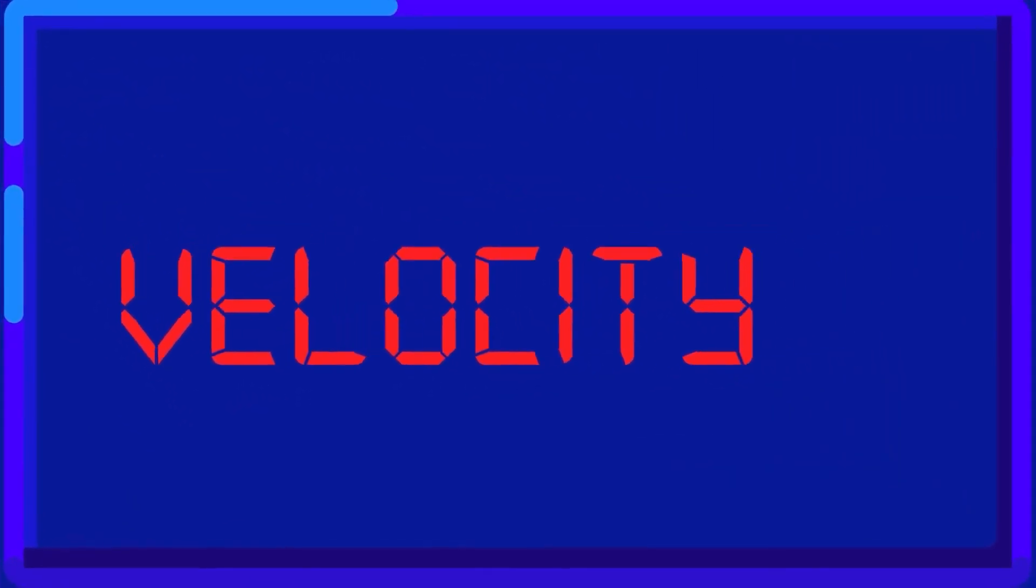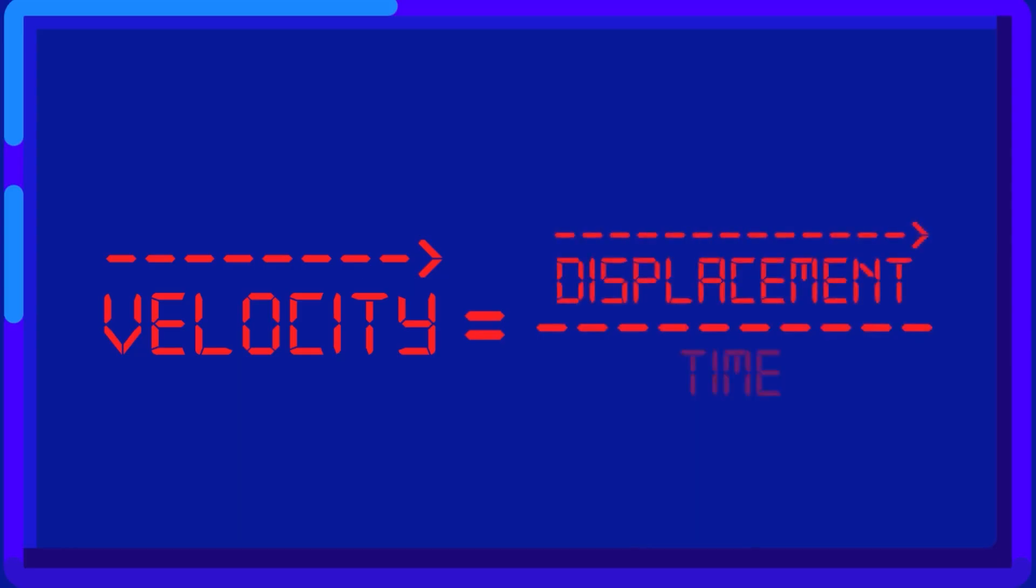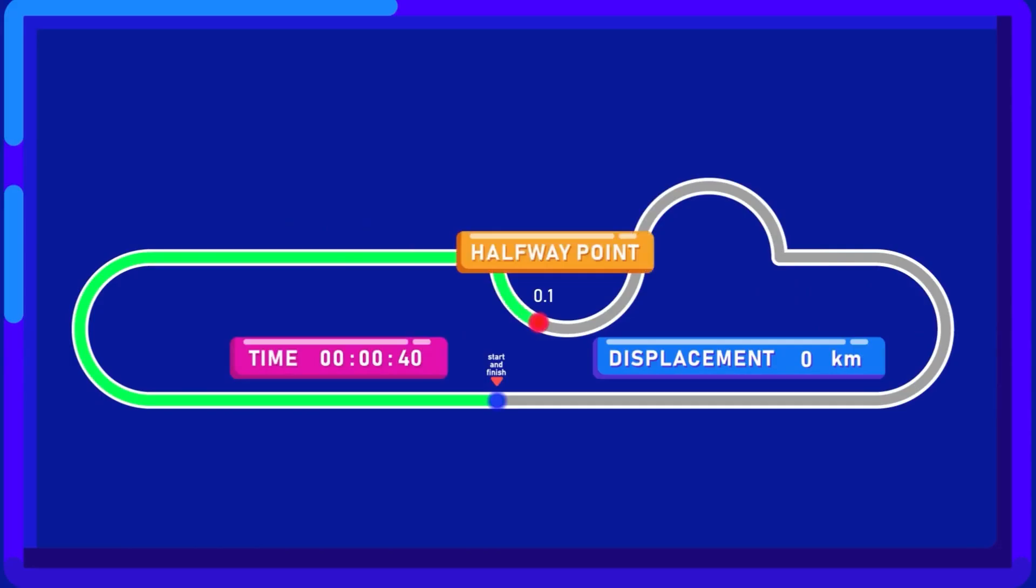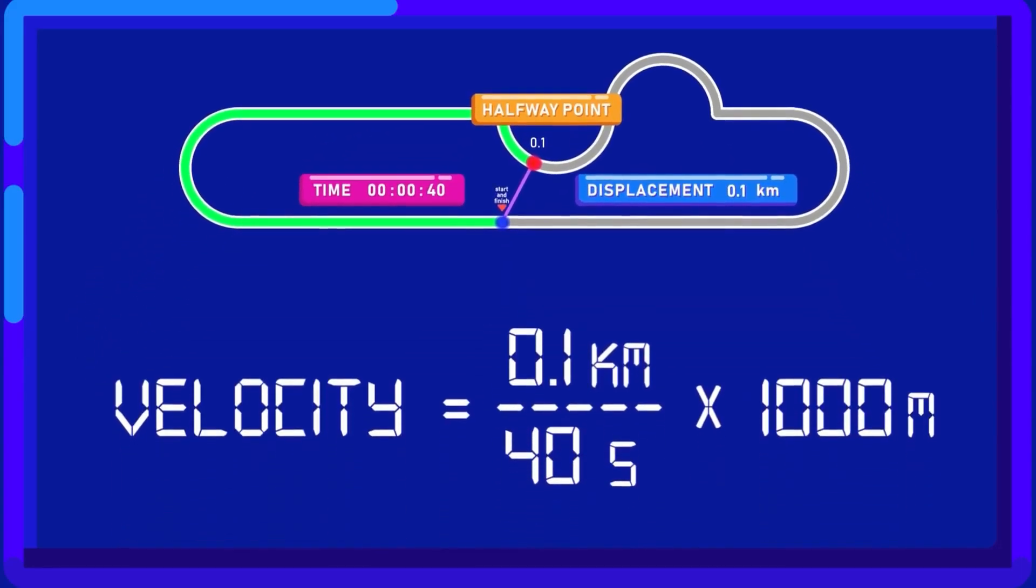Velocity, a vector quantity, is determined by dividing the total displacement by the time elapsed. For example, as the driver goes past the halfway point for the first time, the average velocity can be counted by measuring the length between it and the start line, divided by the time elapsed.